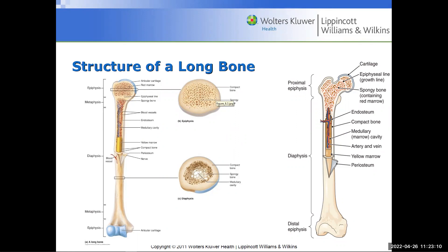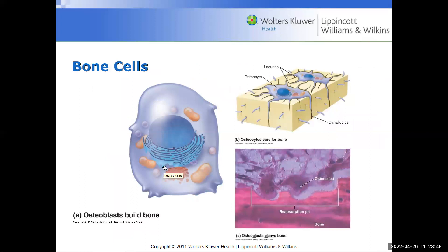The compact bone is toward the outer area and on the inner area you have spongy bone. Why is spongy bone called spongy? Because of its structure — it's like a mesh, it looks like a sponge. In the diaphysis, the spongy bone has more spaces compared to at the epiphysis.